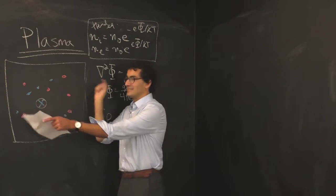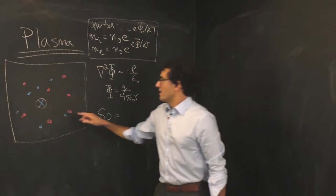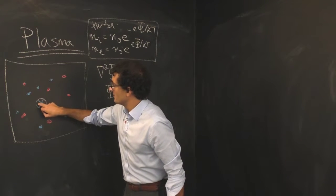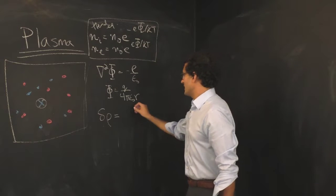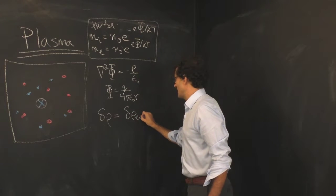The delta rho that effectively comes from putting this charge in actually has two sources. It has, first of all, the density of the charge that I've introduced by hand. I've stuck this charge in.